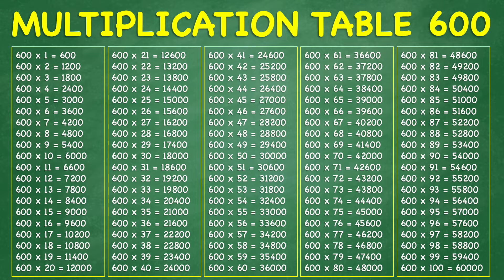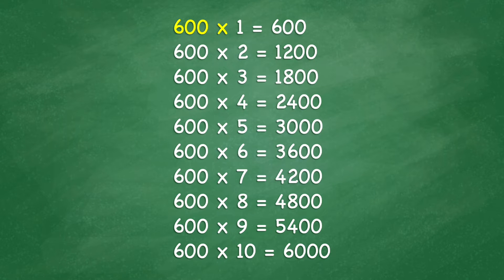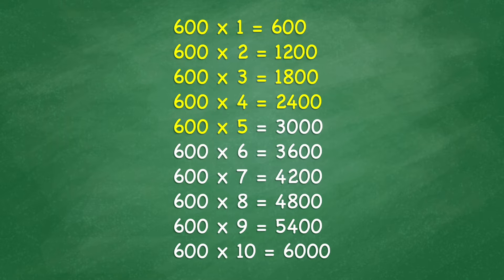Multiplication table 600. 600 times 1 equals 600. 600 times 2 equals 1,200. 600 times 3 equals 1,800. 600 times 4 equals 2,400. 600 times 5 equals 3,000. 600 times 6 equals 3,600. 600 times 7 equals 4,200.